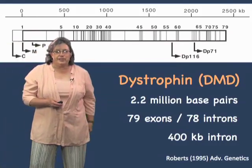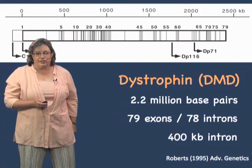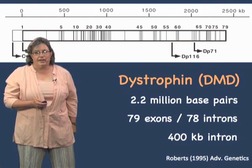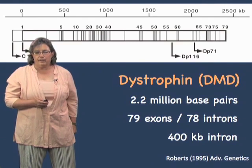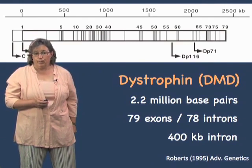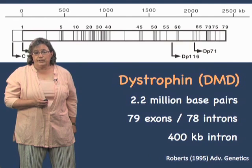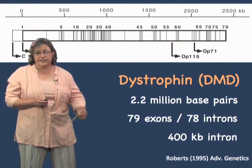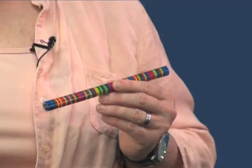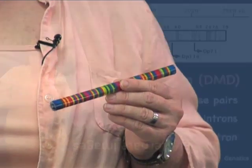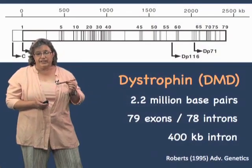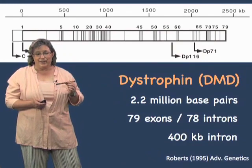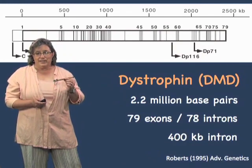You've just seen how long dystrophin RNA is — that was a 99.4 foot rope. Once all of those introns are removed, this is the size of the messenger RNA to scale. This messenger RNA is very long — it is a 17,000 base messenger RNA — but it is less than 1% of the original RNA that was transcribed.